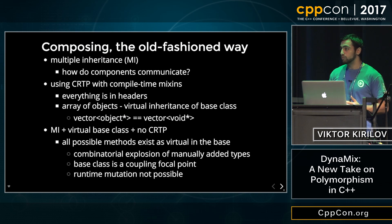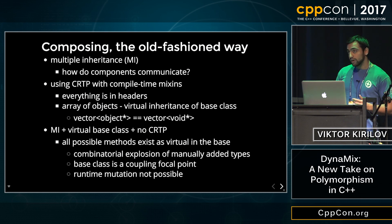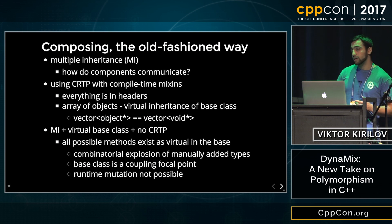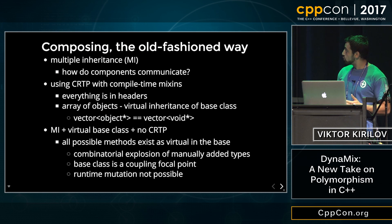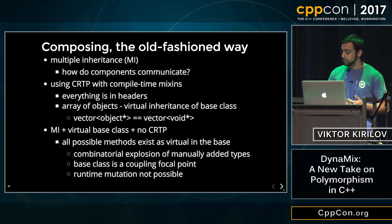We might multiply inherit from these, but then how do they communicate with each other? We might use CRTP with compile-time mixins, but then everything ends up in header files, and also we can't have an array of the composite objects — unless each of the components inherits virtually from a common base class. But even then, we have problems like: if we have an array of pointers to such objects, they don't have anything in common — there's no common interface.